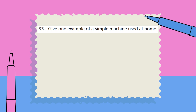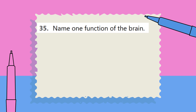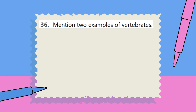Question 34: What should be done to prevent malaria in a community? Question 35: Name one function of the brain. Question 36: Mention two examples of vertebrates.